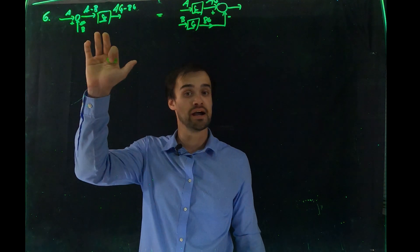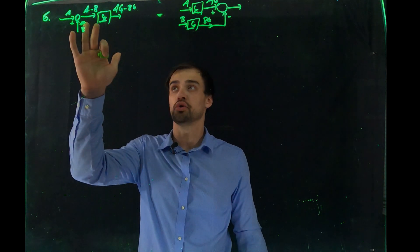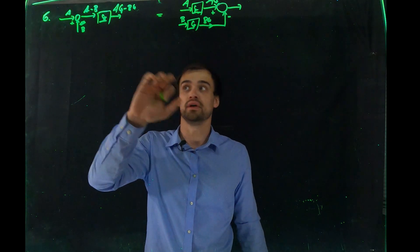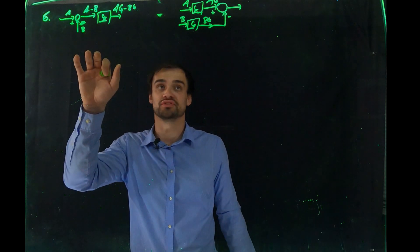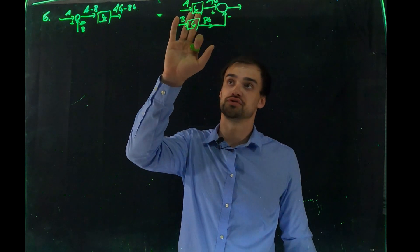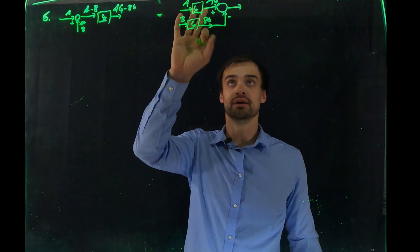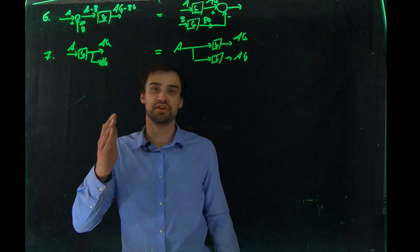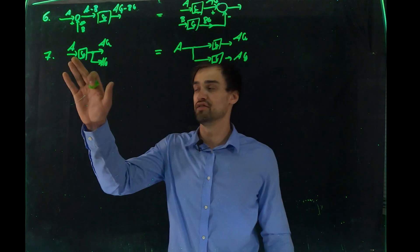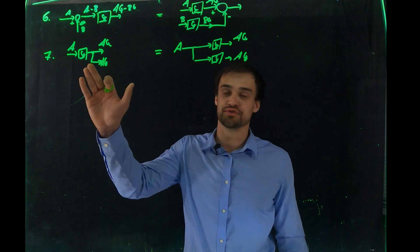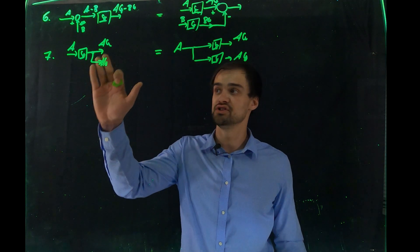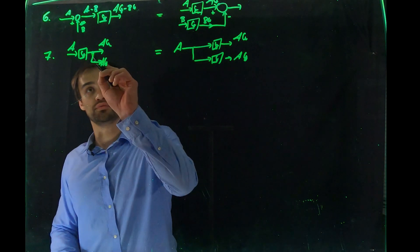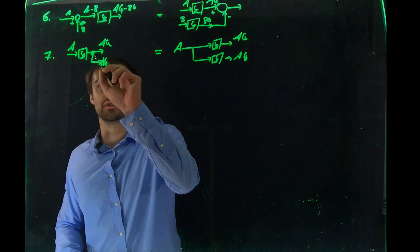Rule six says: if inputs A and B are subtracted at a summing node giving A minus B, and the result passes through transfer function G to give A·G minus B·G, you can equivalently give each input its own separate G block and subtract afterwards, obtaining the same result.